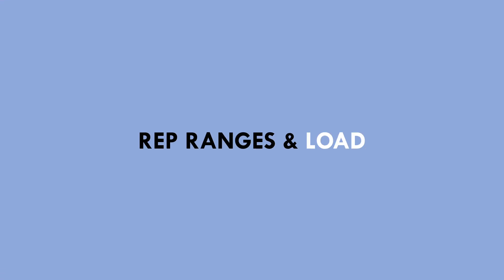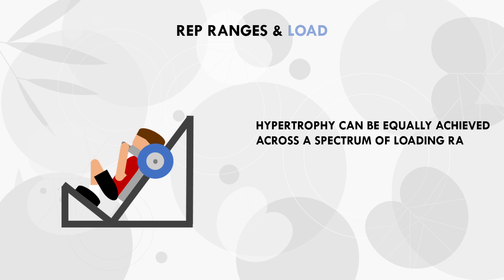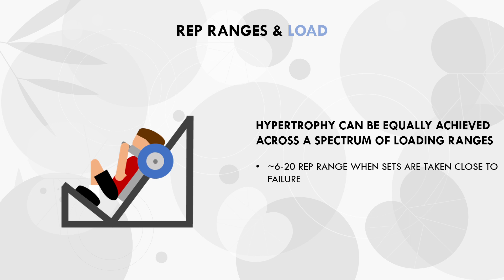The first benefit is to manage rep ranges and loads. As the scientific literature shows, hypertrophy can be equally achieved across a spectrum of different rep ranges and loads. As long as sets are taken fairly close to failure, trainees can achieve equal hypertrophy per set within approximately the 6-20 rep range. So instead of prescribing exact reps and loads for each session, trainees can simply train to an appropriate proximity to failure and then adjust the load based on rep performance achieved with each set.